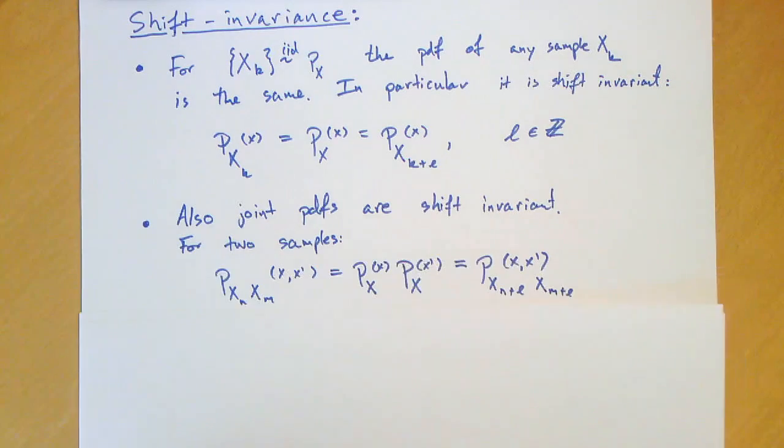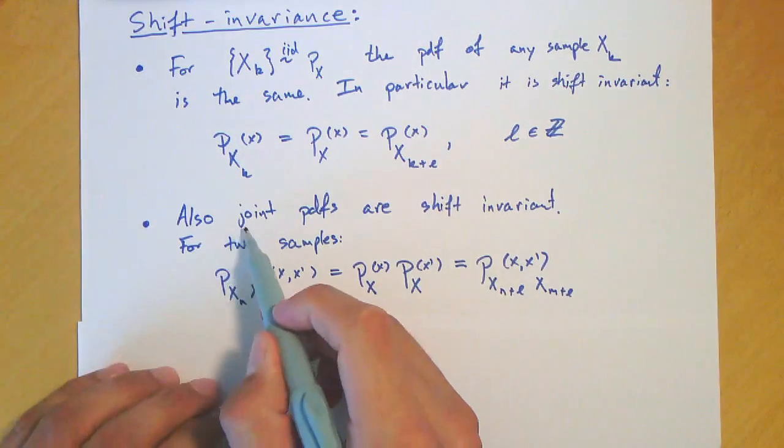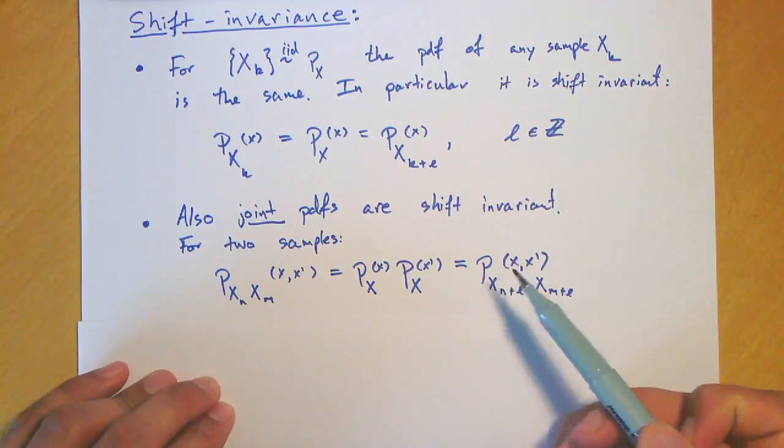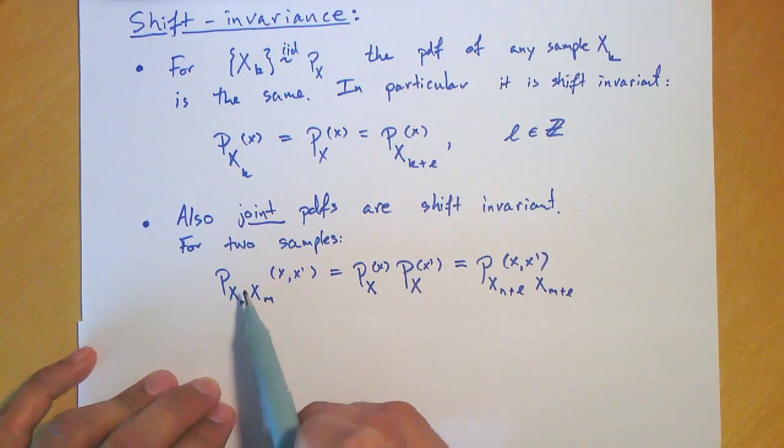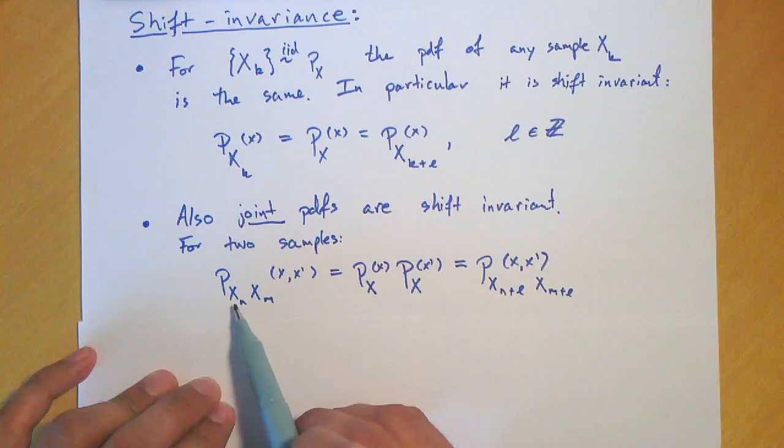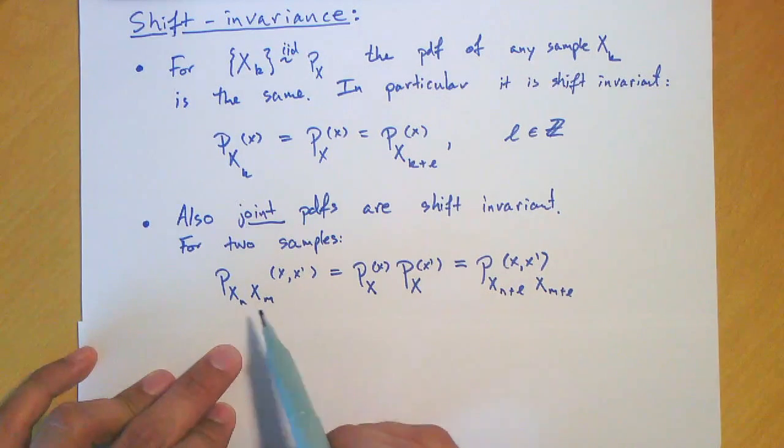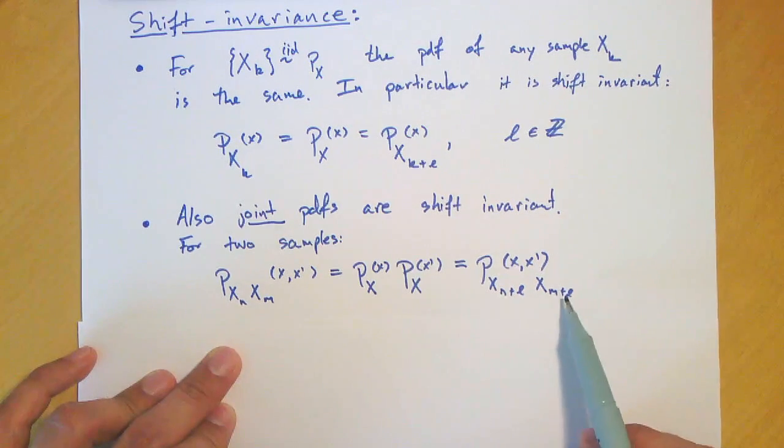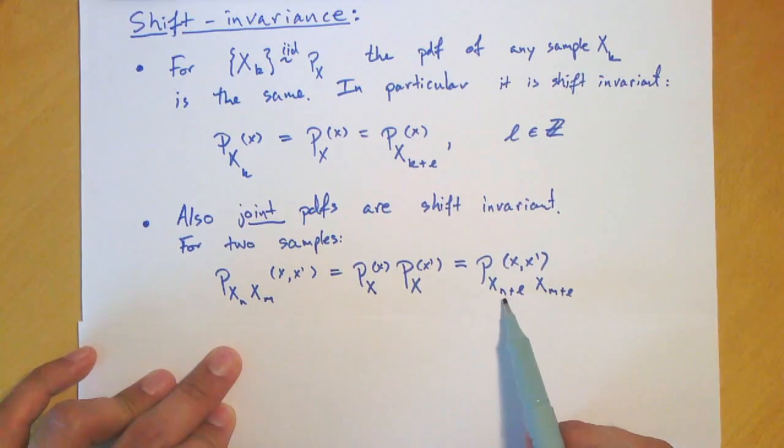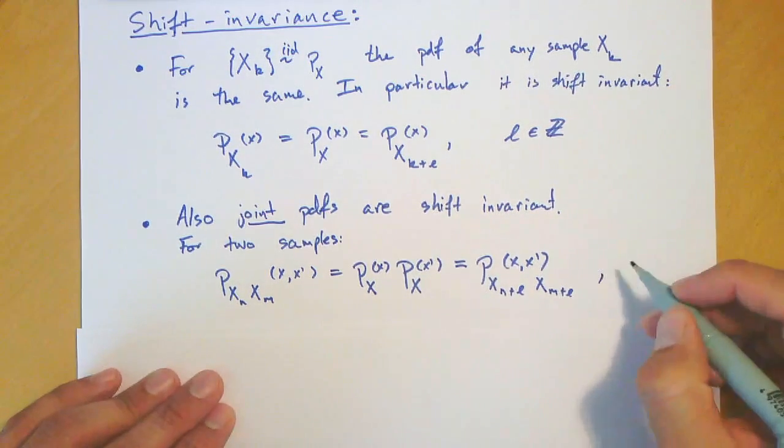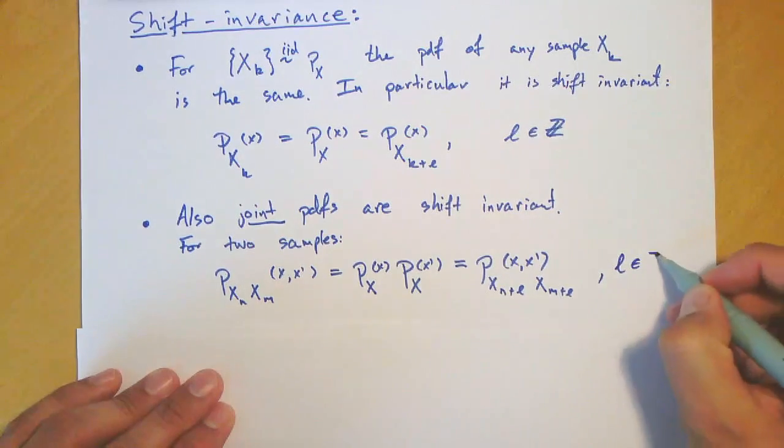Moreover, it actually holds true for joint PDFs. So joint PDFs are also shift invariant. For instance, for two samples, if you consider X number N and XM, the joint PDF, because they're independent, is just a product of PDFs. But this is also the product of the PDF taken at N plus L and M plus L, where L is some integer.